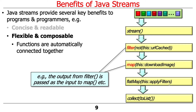Map takes in one input element and produces one output element — it's a one-to-one mapping. Flat map, in contrast, can take one input element and produce multiple output elements, or take n input elements and produce a smaller number of output elements, or do a one-to-one mapping. It does a wider range of things than map does. It's a very cool intermediate operation.